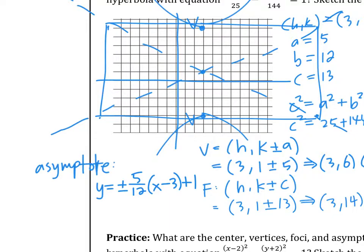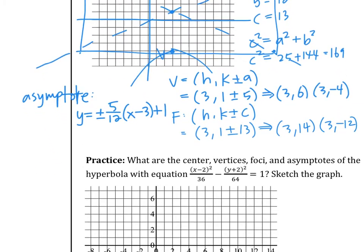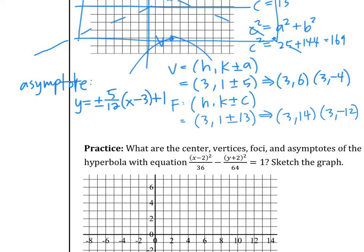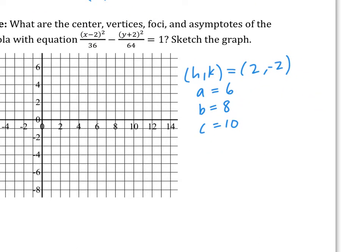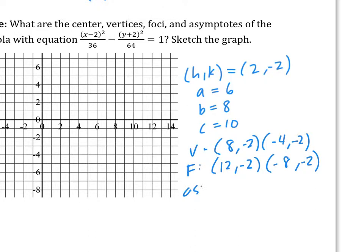Let's try the next one. Write down H, K, A, B, C — let me check it before you continue. H, K is (2, −2), A is 6, B is 8, C is 10. Vertices are at (8, −2) and (−4, −2). Foci are at (12, −2) and (−8, −2). The asymptotes are y equals negative 2 plus or minus (4/3)(x minus 2). Please don't forget your y equals — it is minus 2, not plus 2. It's just k, not the opposite sign.